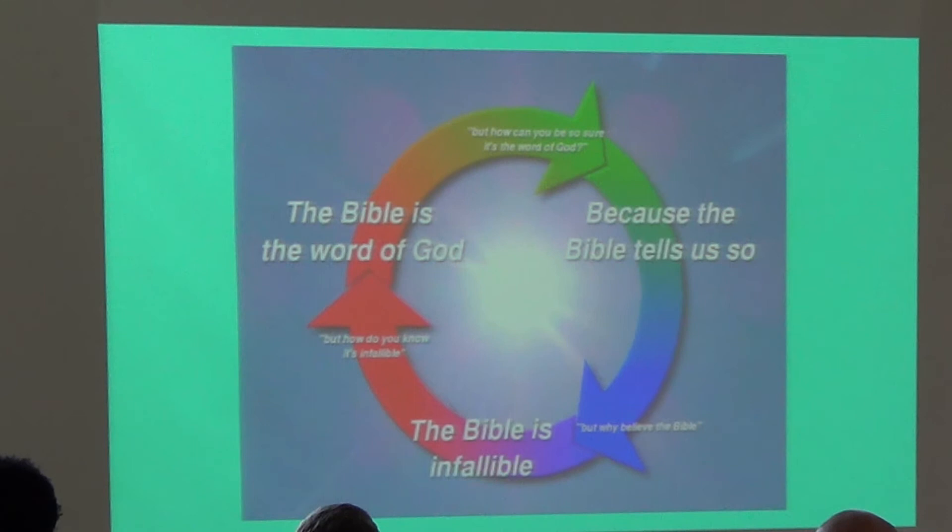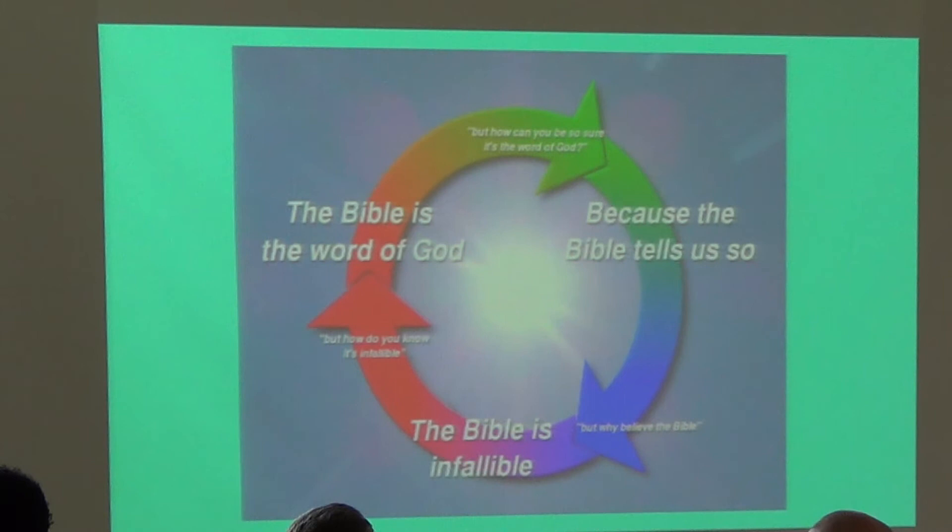The demonstration of why that line of thinking is fallacious: the Bible is the word of God. But how can you be sure? Because the Bible tells us so. But why should we believe the Bible? Because the Bible is infallible. But how do you know it's infallible? Because the Bible is the word of God. You can see how that just goes round and round in circles — that is a great example of begging the question.